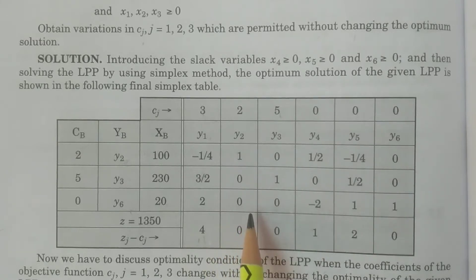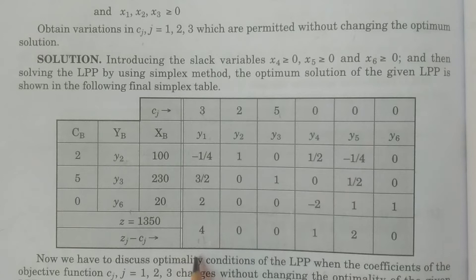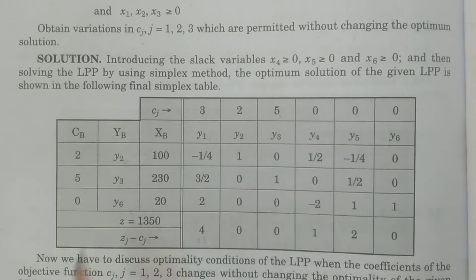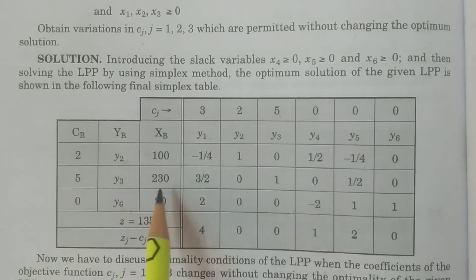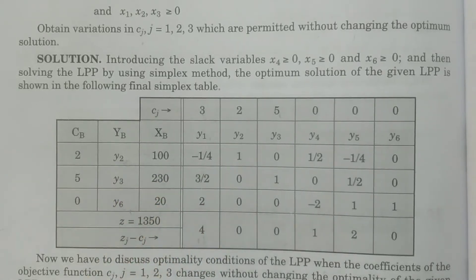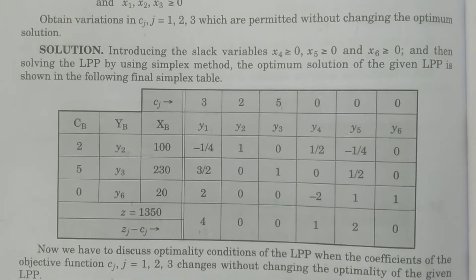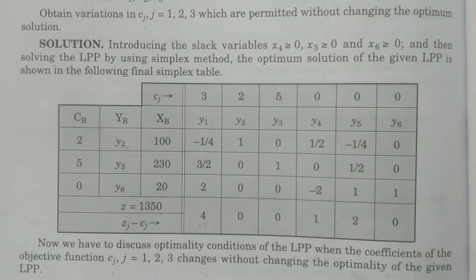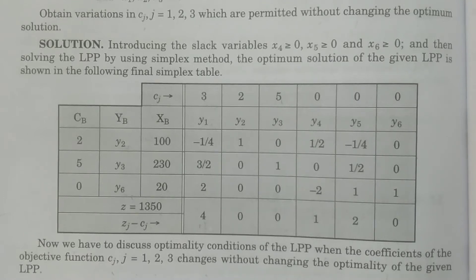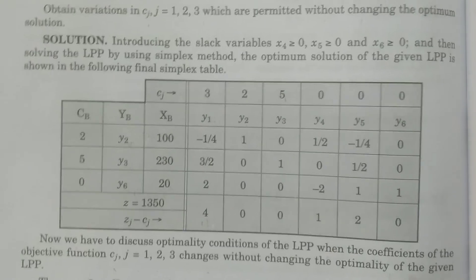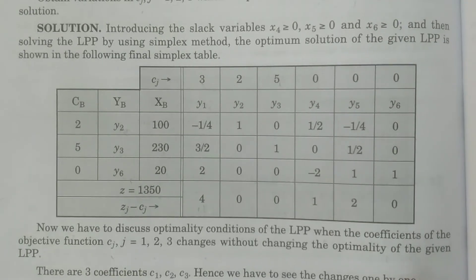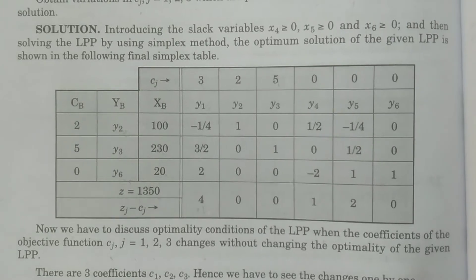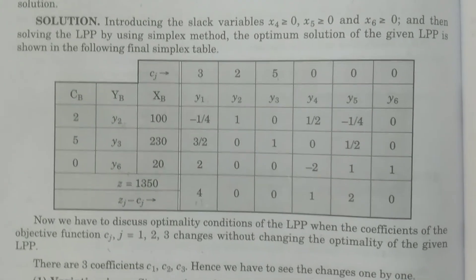We obtain the final optimum simplex table. All net evaluations are ≥ 0. We got z = 1350, and y2, y3, y6 are in the basis, so x2 and x3 values are obtained. The discussion is: given variations in the coefficient Cj of the objective function, calculate the range without changing the optimality condition. There are three coefficients: C1, C2, C3.